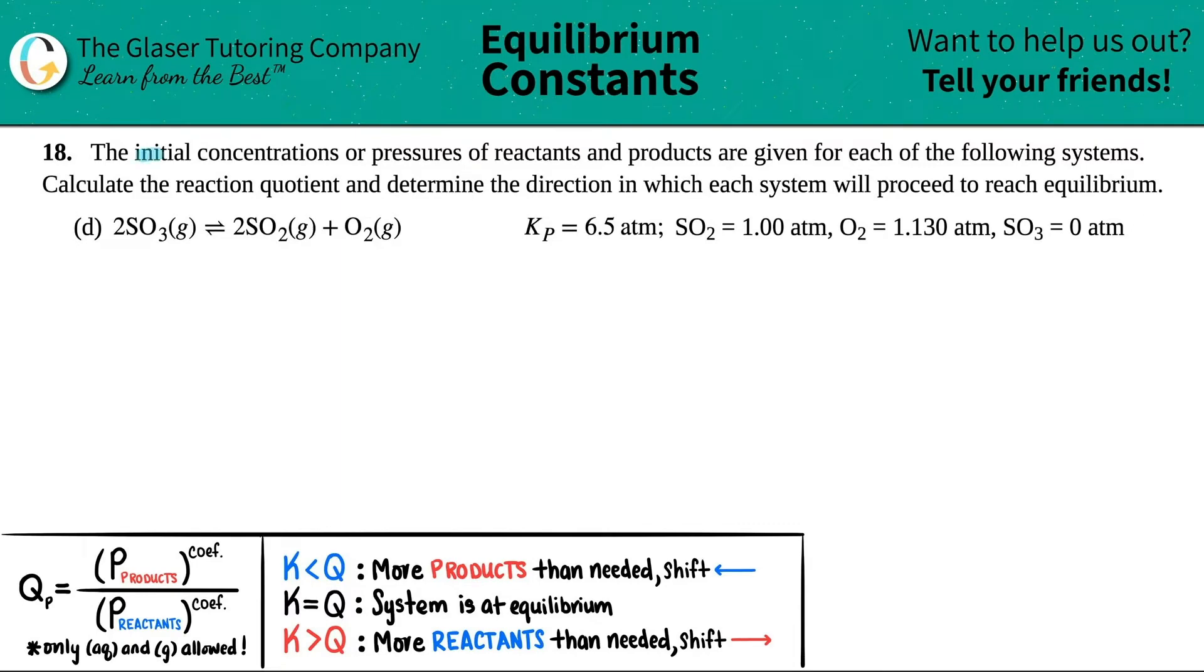Number 18: The initial concentrations or pressures of reactants and products are given for each of the following systems. Calculate the reaction quotient and determine the direction in which each system will proceed to reach equilibrium.